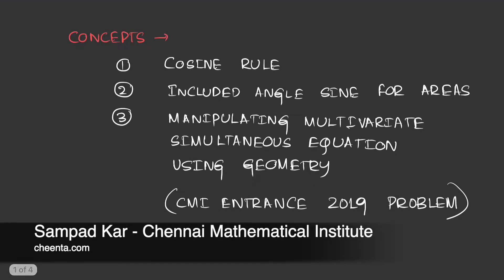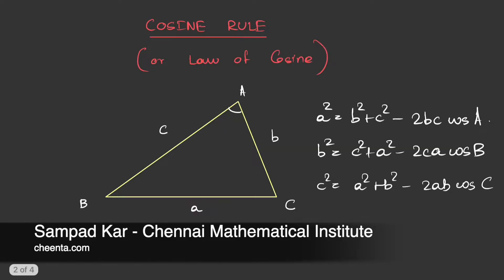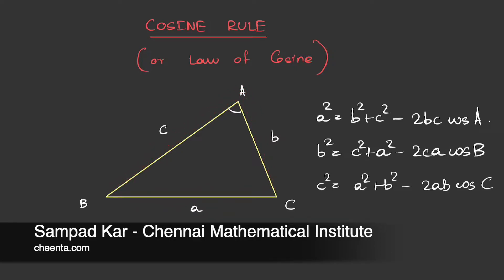Before we move on to the problem, we first learn about the cosine rule. The cosine rule, or the law of cosines, gives us a way of relating two sides of a triangle to the third side given the included angle. With the help of this, we can calculate the length of the side of a triangle or find the measure of the included angle, as we will see in our problem.